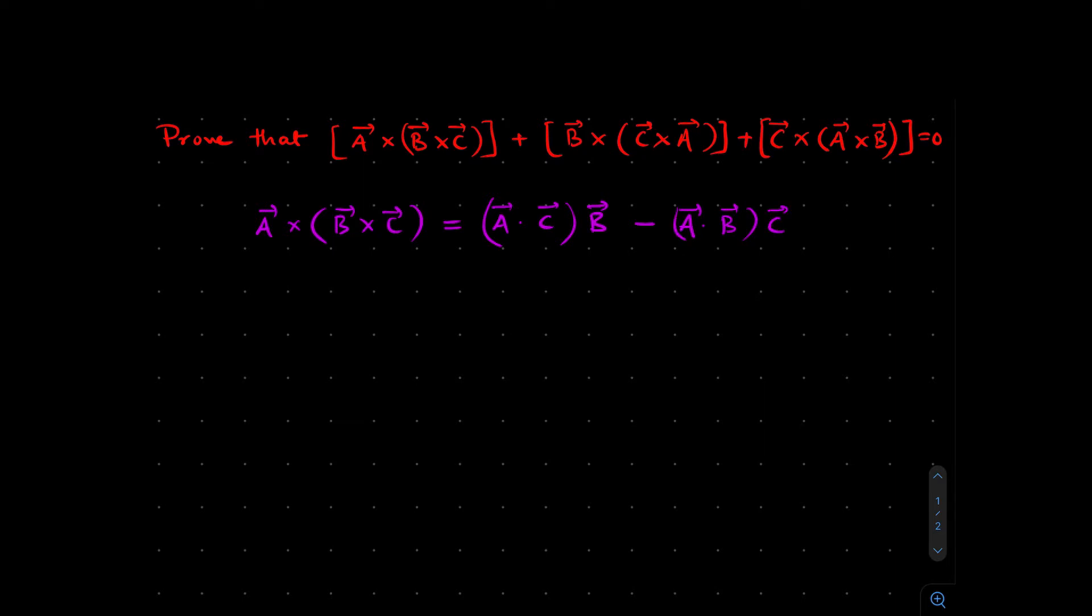Now what is this? This is basically a vector identity. Vector identity is something that is true irrespective of what the individual vectors are. So this is going to be true for any vector A, any vector B, any vector C. That's what makes it an identity.